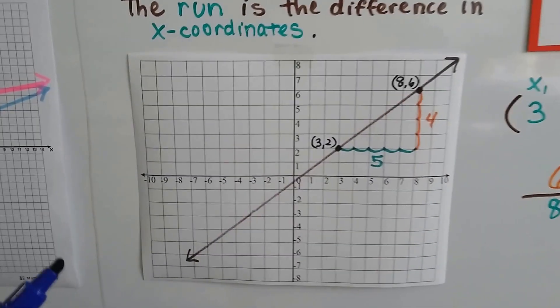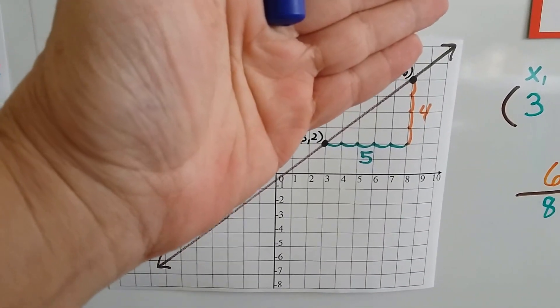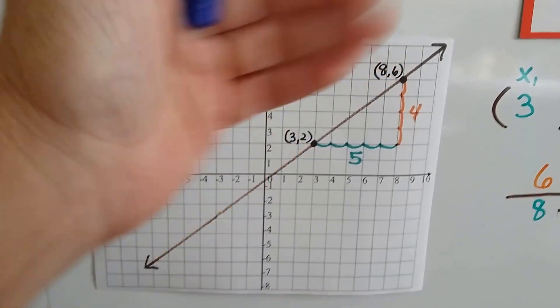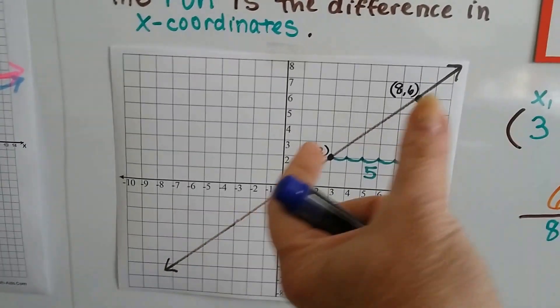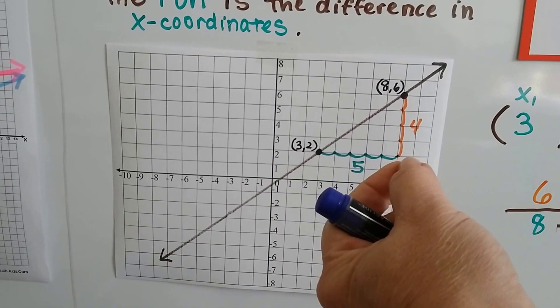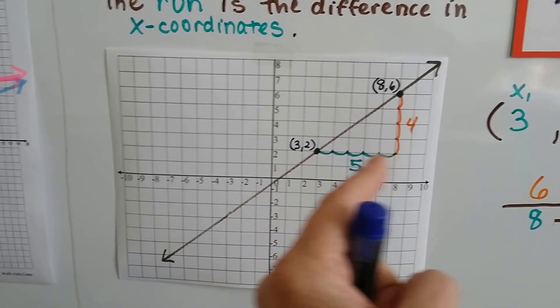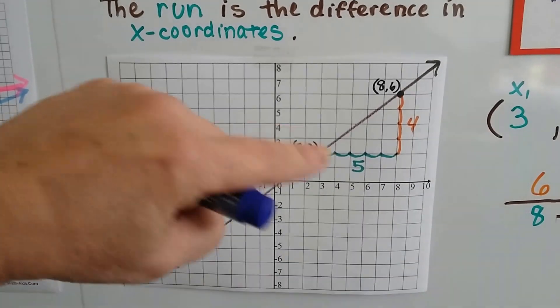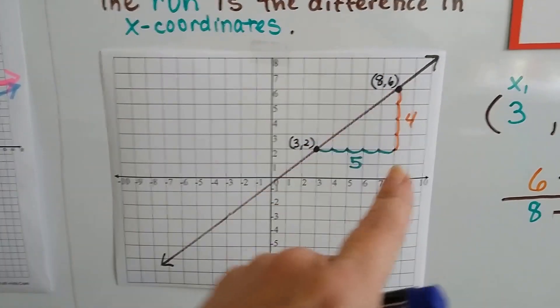So just by looking at this, if I just had the two points and I didn't know what the coordinates were, I just knew that there were two points on the line, I could see where these two meet to make a triangle. And that would be my run. That would be my rise. And we do rise on top of run. We could just count where it makes the triangle.